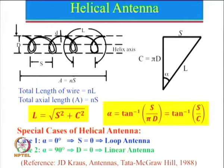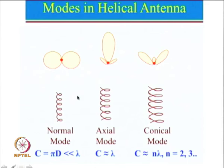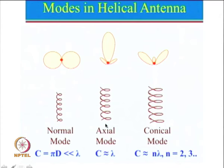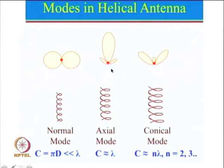Let us look at the different modes in which helical antenna can operate. In general, helical antenna can operate in three different modes: normal mode, axial mode, and conical mode. For normal mode, the radiation pattern maximum is perpendicular to the helical axis, similar to a monopole antenna. The condition for normal mode is that the circumference — equal to pi·d — must be much less than lambda. Axial mode is obtained when circumference is approximately equal to lambda, and the maximum radiation is along the helical axis.